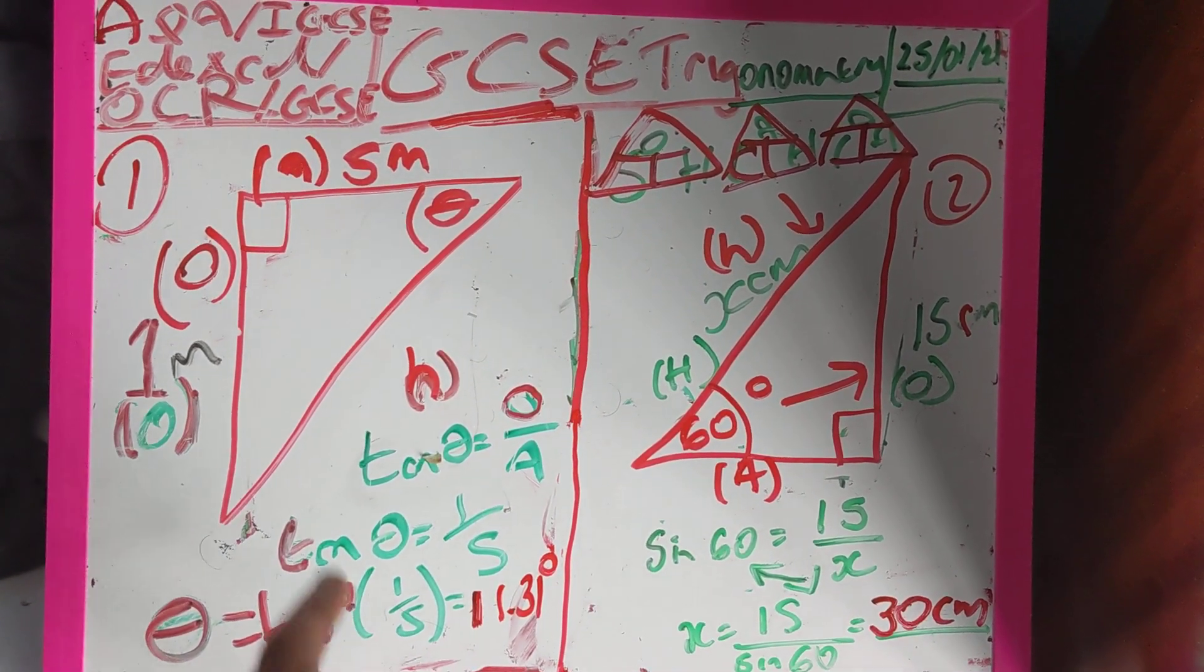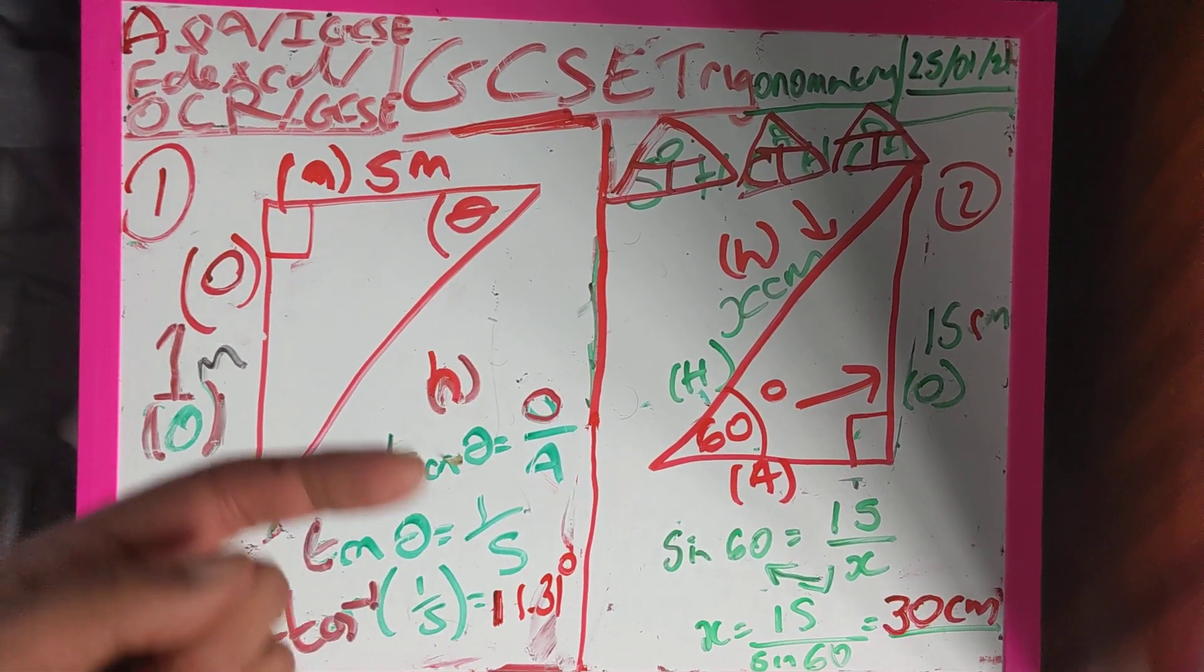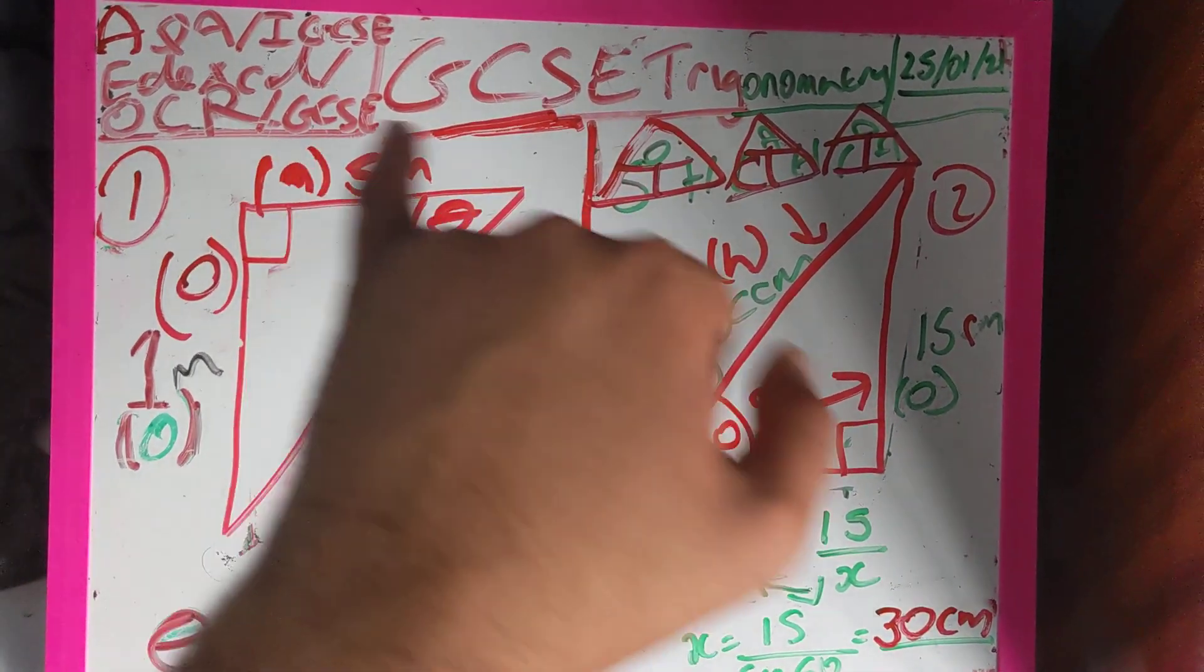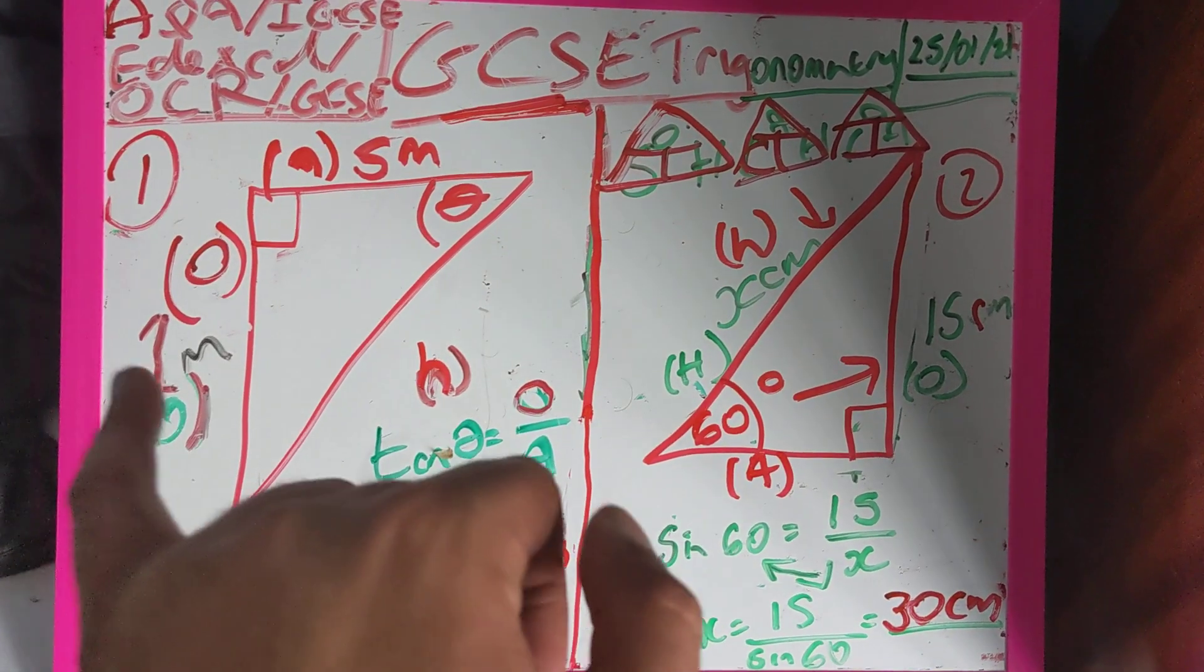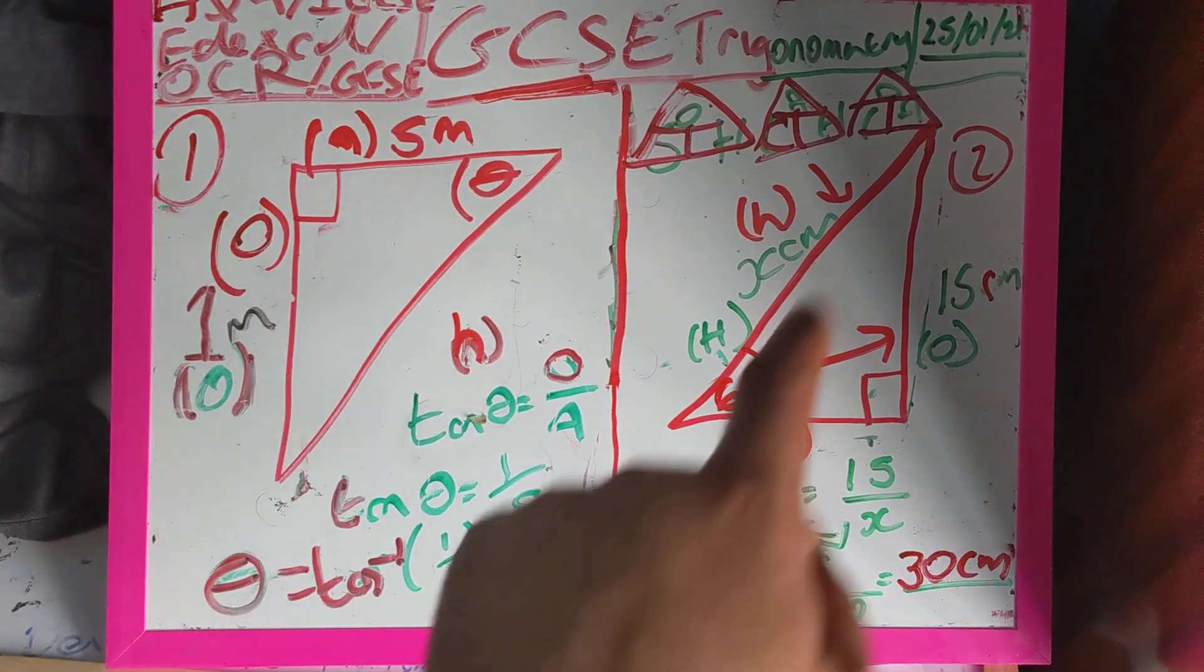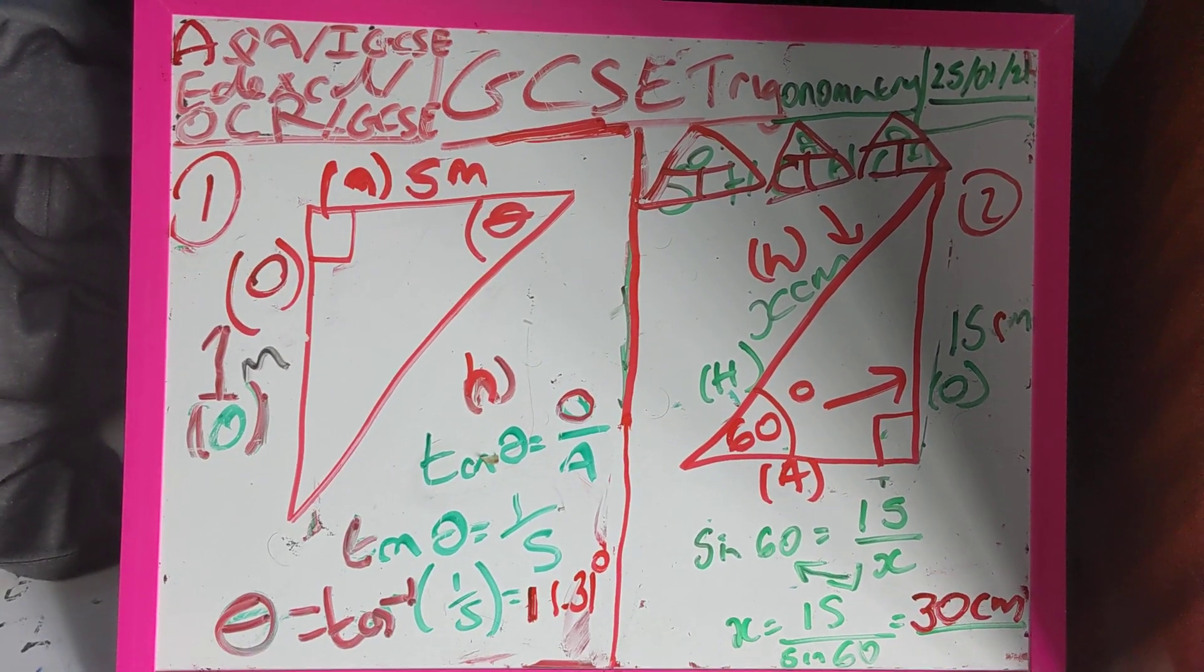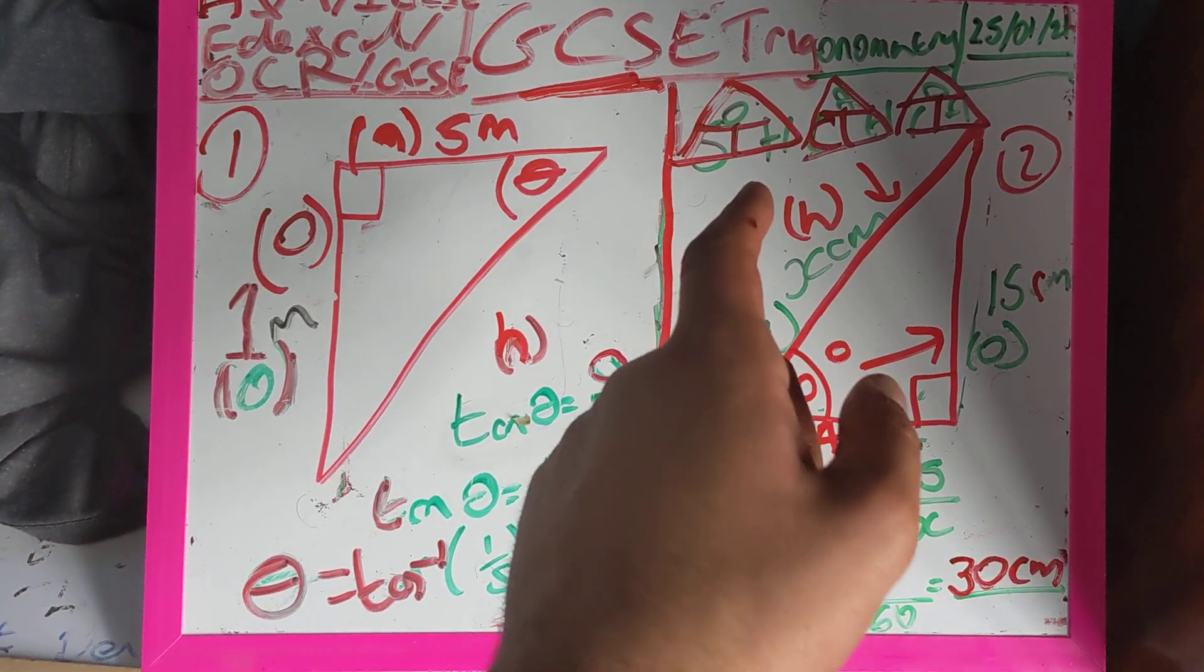And we can use Pythagoras, which I'm going to come on to in the next set of videos, for working out the length. So Pythagoras is used to work out the length, trigonometry is used to work out the angle and or the length of a right angle triangle, but it's used predominantly for working out angles. And then I've used SOHCAHTOA.